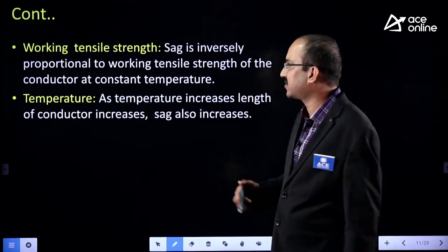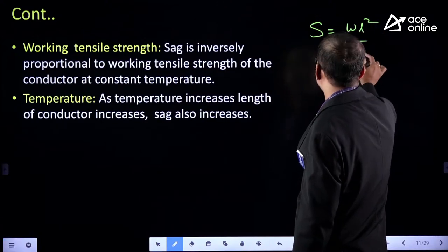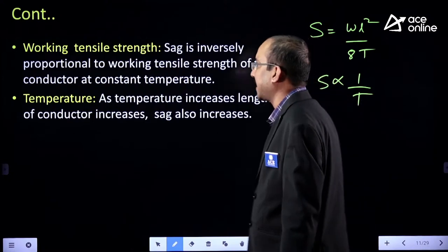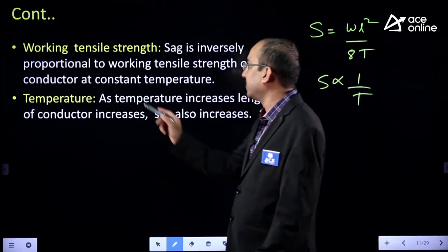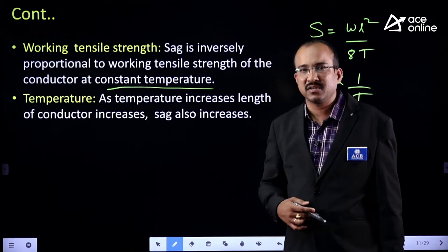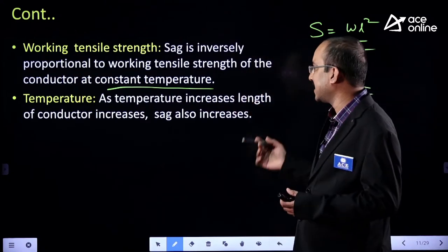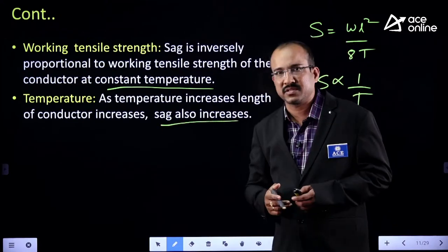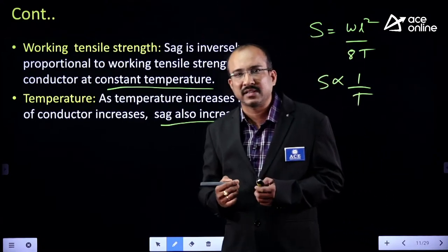What about temperature? SAG also depends on temperature. As temperature increases, the length of the conductor increases, so SAG also increases. These are the factors influencing SAG: weight of the conductor, length of the span, working tensile strength, and temperature.